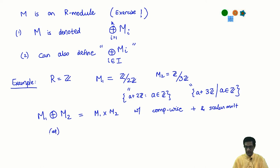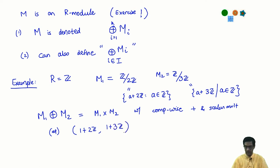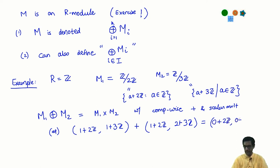For example, take the element (1+2Z, 1+3Z) in M1 ⊕ M2. To perform addition, say I want to add (0, 2+3Z) to it — I just add each component separately. The answer is (1+2Z, 3+3Z) = (1+2Z, 0+3Z). All operations are done component-wise. This is M1 ⊕ M2, a set with 6 elements, and in fact you have encountered this before when studying groups and the Chinese Remainder Theorem.